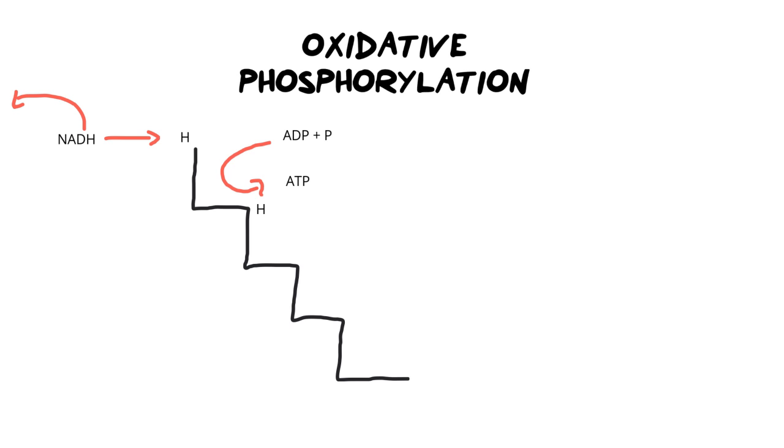This process is going to happen again. Along comes an ADP molecule with a phosphate. It's going to swoop past our hydrogen, which is in the membrane. And we're going to form an ATP molecule. And the hydrogen then lowers itself to a slightly lower energy level. So it's gone down a step.